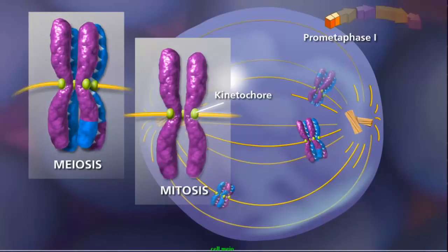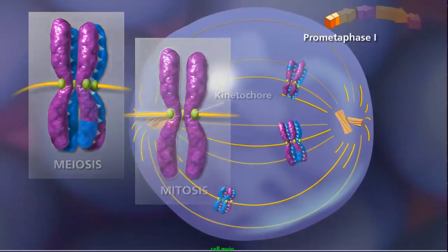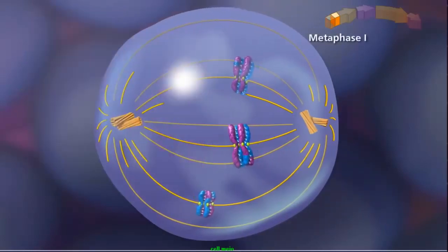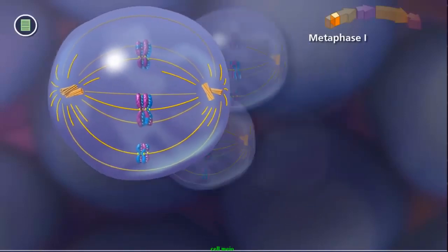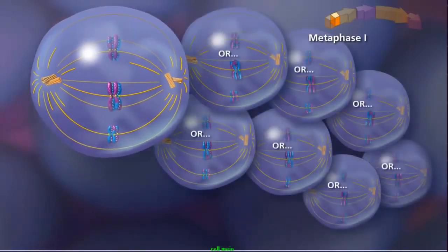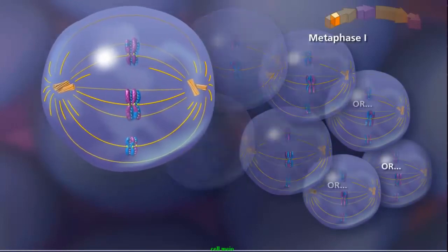In mitosis, each sister chromatid is attached to a spindle fiber. The fibers originate from opposite poles. During metaphase I, bivalents randomly align along the metaphase plate. Due to independent assortment, this alignment is random and adds to genetic diversity.